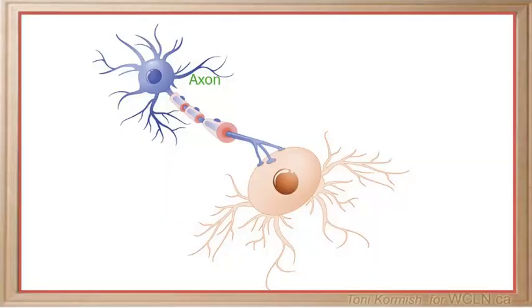First, remember that axons always carry the nerve impulse away from the cell body, and dendrites always carry the nerve impulse toward the cell body.